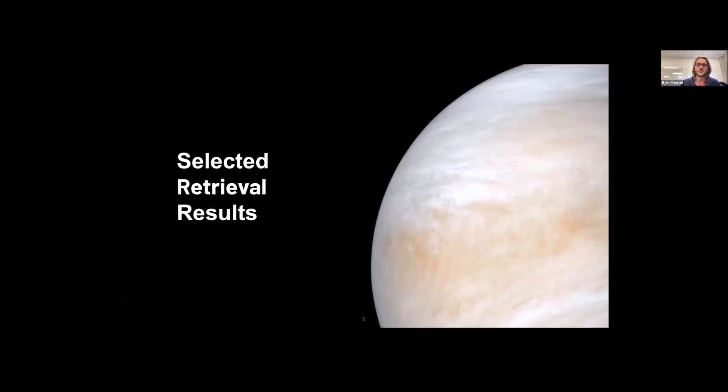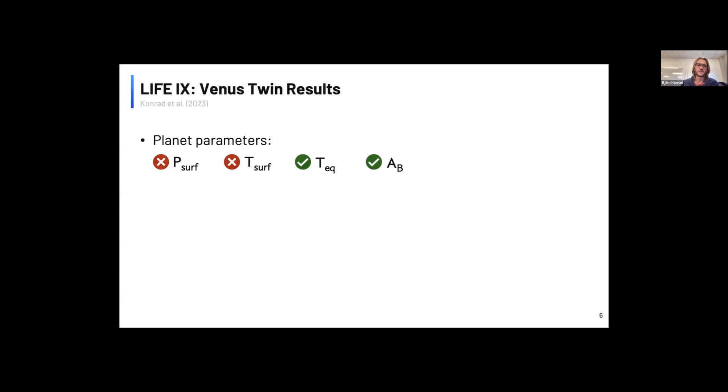So we run different retrievals using two different models. And what I'm going to show you now is some very basic results from these retrievals. So the first thing we find is that we cannot really constrain the surface temperature and the surface pressure for Venus because the lower atmosphere in Venus does not contribute to the mid-infrared emission directly because of this optically thick cloud layer.